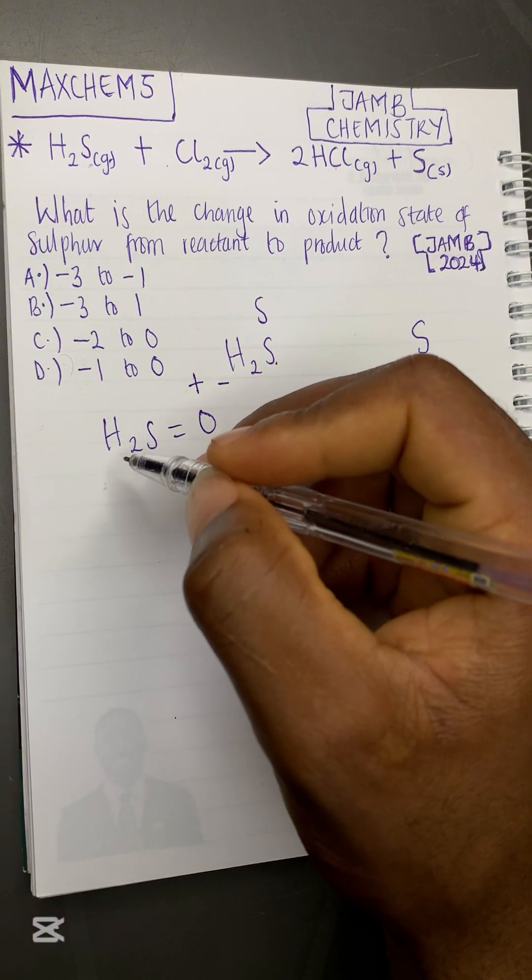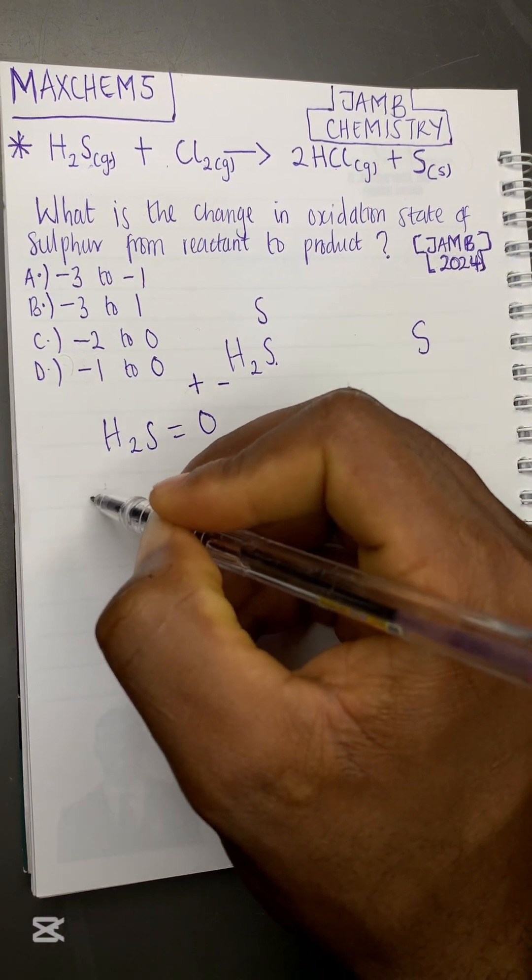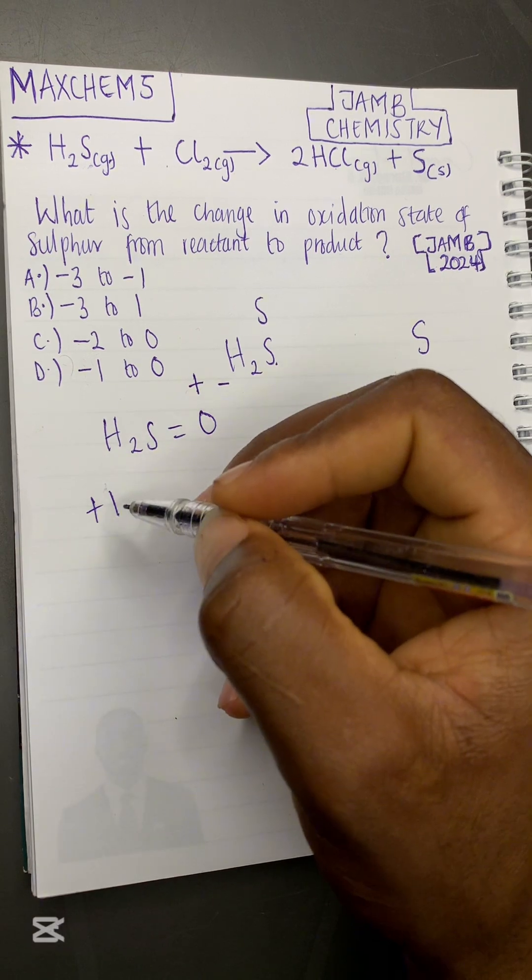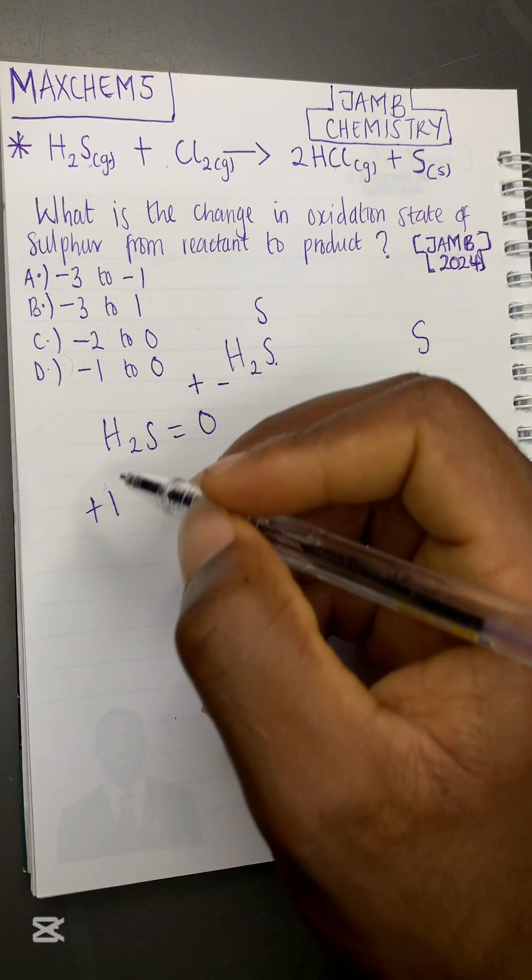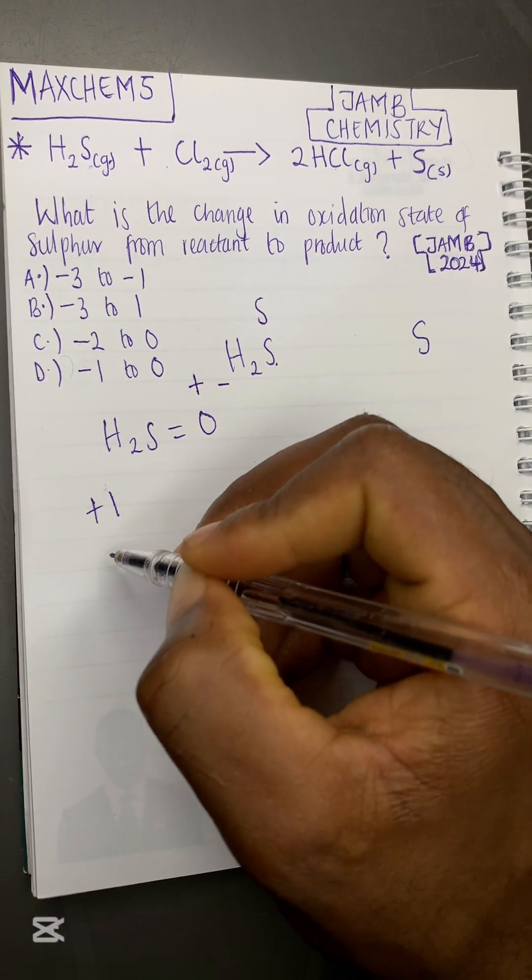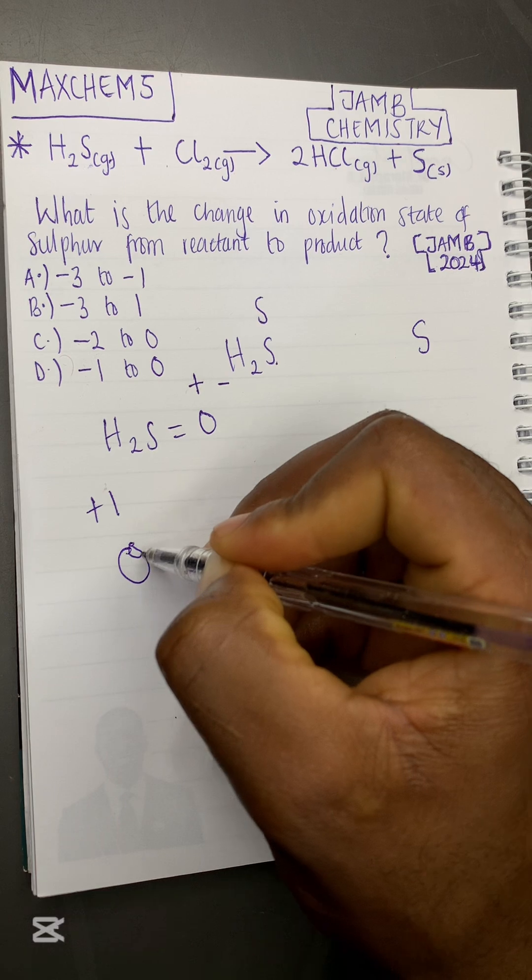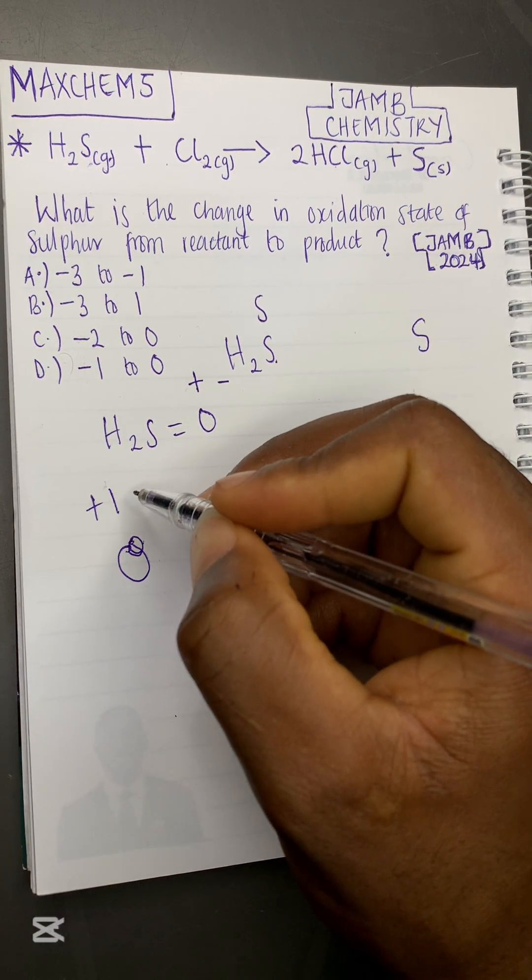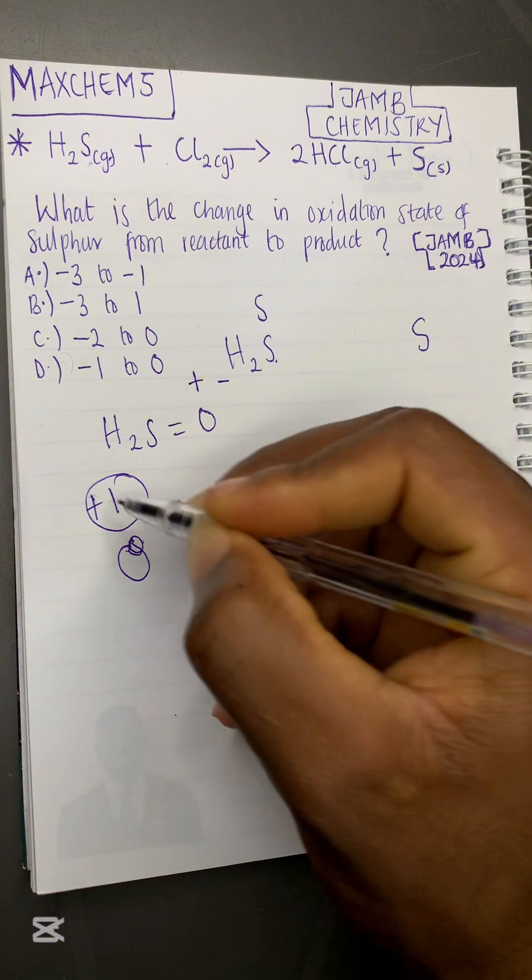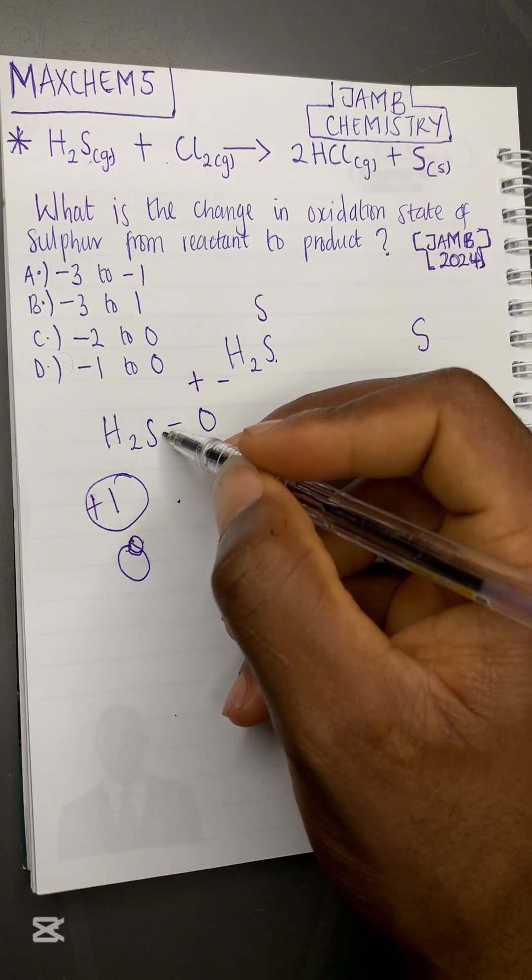We all know that the oxidation state of hydrogen in H₂S is always plus one. That means one atom of hydrogen donated one electron to sulfur. Let me quickly explain. We know that hydrogen has an atomic number of one, so it has one electron in its shell. The oxidation state of hydrogen is plus one. It will donate the one electron.